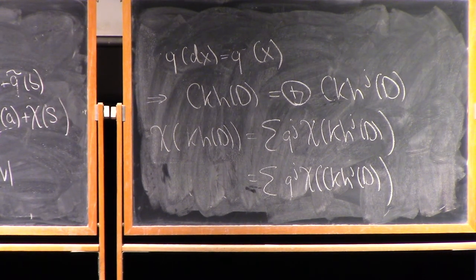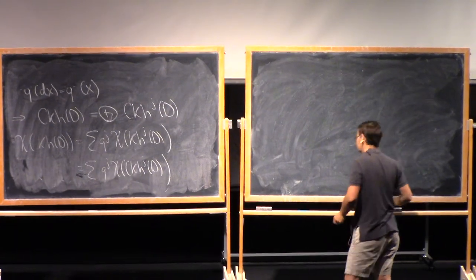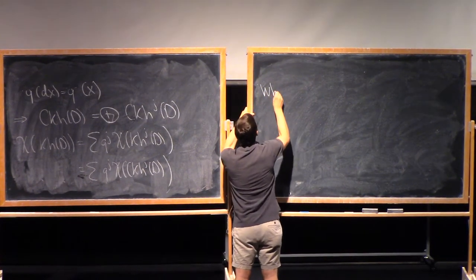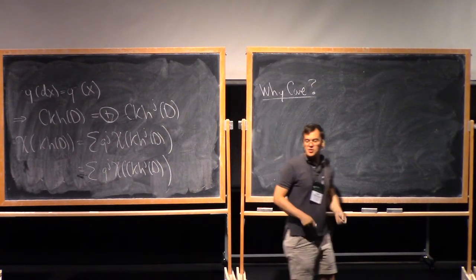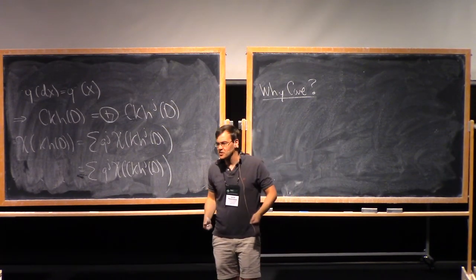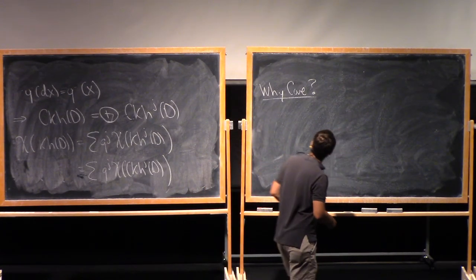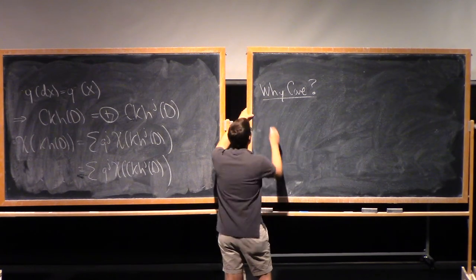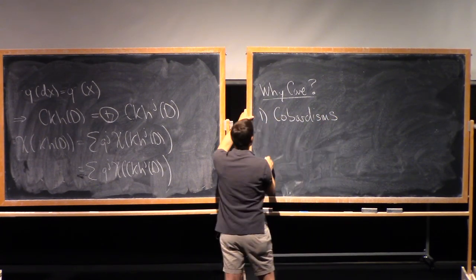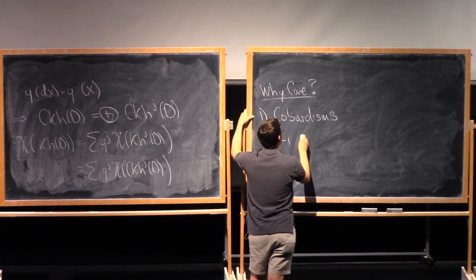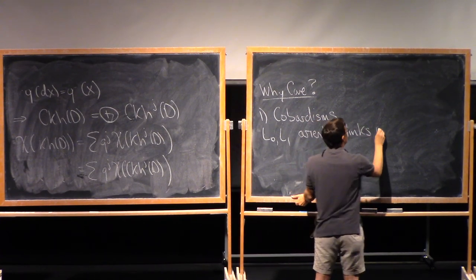So now I guess we should ask the question, why do we care? Why is this better than the Jones polynomial, for example? I mean, I guess you can use it to distinguish more knots, but that's almost never a good reason to think that a knot invariant is interesting, because it tells the difference between different knots. So here are two good reasons to care. So one has to do with cobordisms. So let's suppose L0 and L1 are oriented links in...